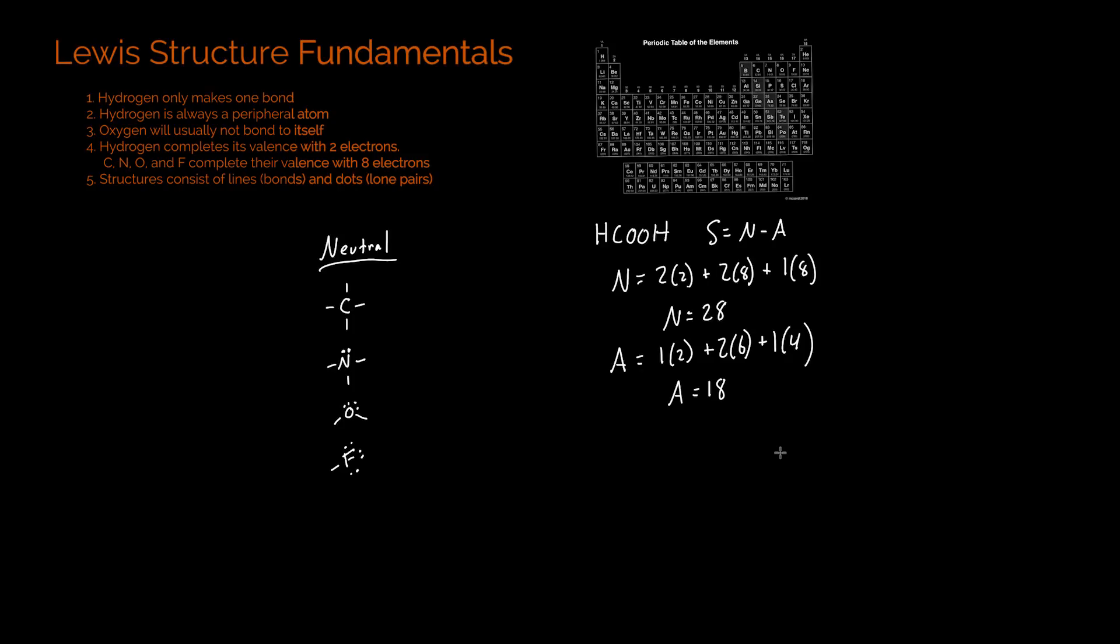And so now I can take my difference, and that's going to be 28 minus 18, which is going to be equal to 10 shared electrons. But remember, what I'm really interested in is dividing by 2 and then getting 5 bonds.